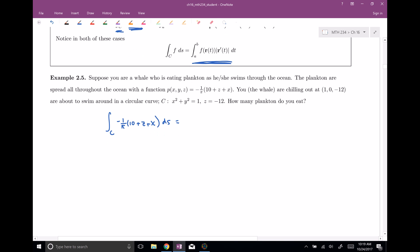So we're gonna integrate over the curve C and we're gonna be adding up, our function is a plankton density function. So it's gonna be this negative one over pi times 10 plus z plus x times ds.